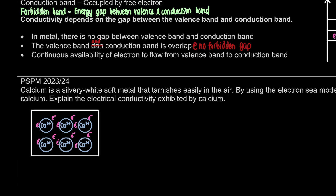This is our electron sea model. Next, I'm going to draw a border around it, and then label the electrons. The sea of electrons is actually free-moving — or delocalized. Delocalized means free-moving electrons. You can use either term: delocalized or free-moving electrons.